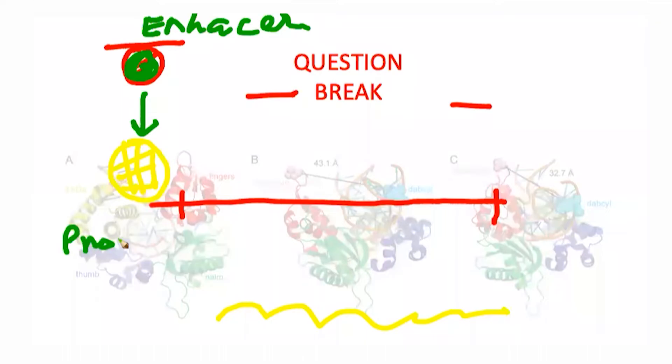The enhancer is different from the promoter in the sense that the promoter is where the initiation complex binds. The enhancer, and the protein bound to the enhancer, will come close to this piece of DNA and trigger it. So that's the job of proteins bound to the enhancer.